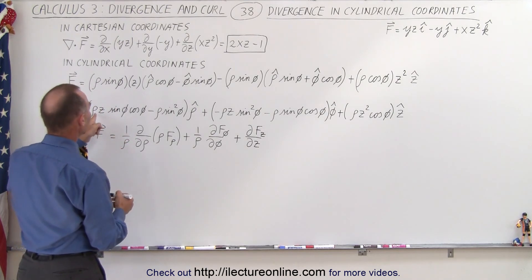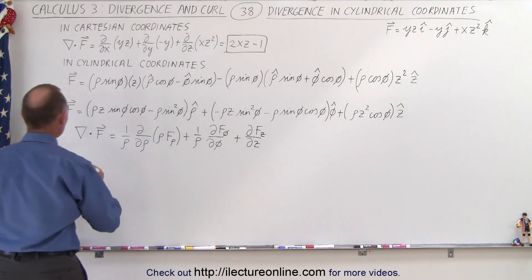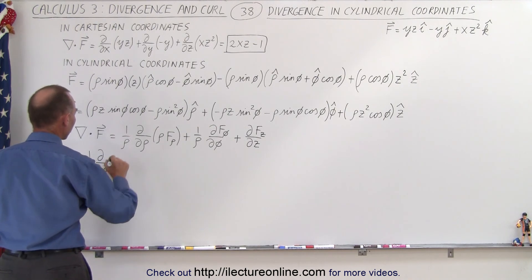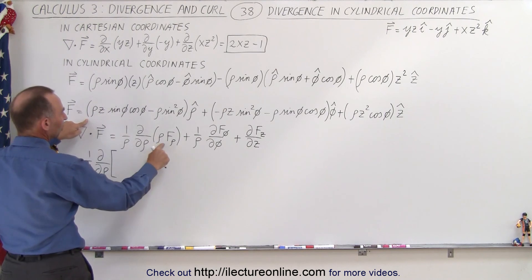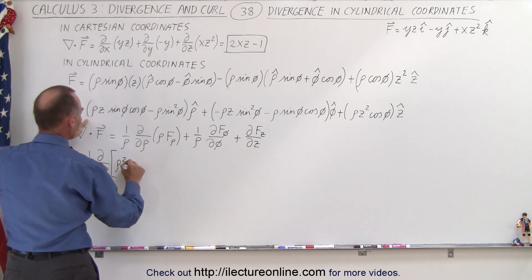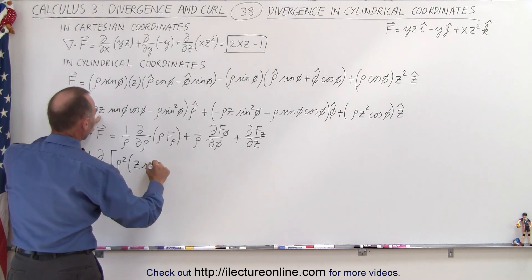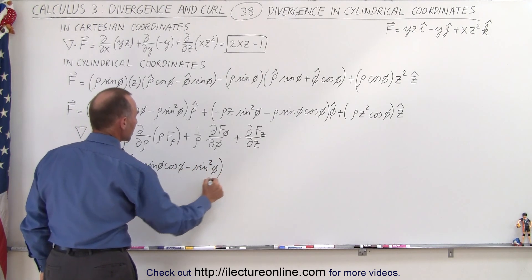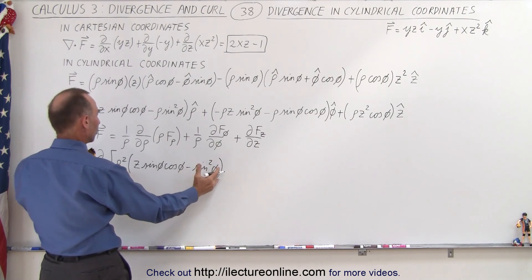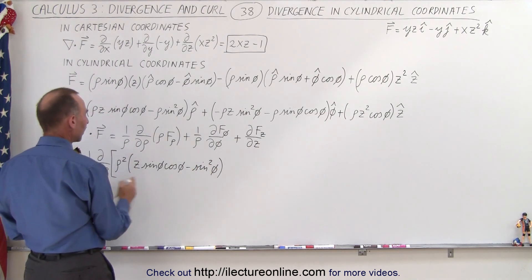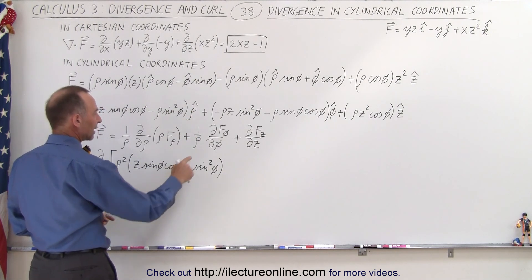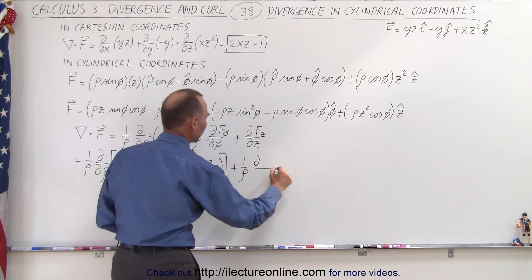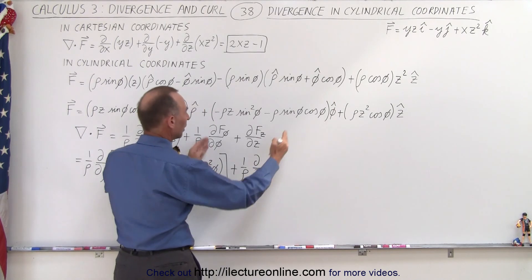Starting with the rho term, we multiply it times rho and then take the partial derivative. This is equal to 1 over rho times the partial derivative with respect to rho of — factoring out a rho and then multiplying times rho — we get rho squared times z times the quantity sine of phi cosine of phi minus sine squared of phi. That's the rho component. Since we take the partial derivative of that, we can leave off the rho unit vector. Then we have plus 1 over rho times the partial derivative with respect to phi of this quantity.